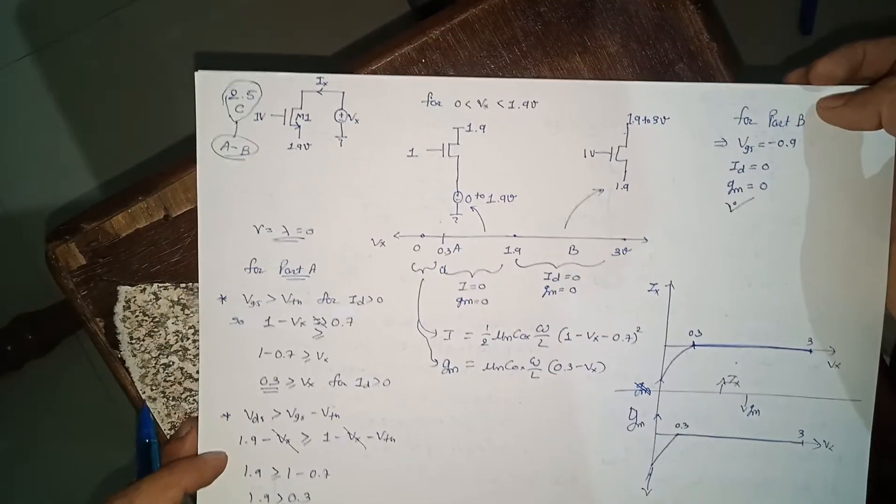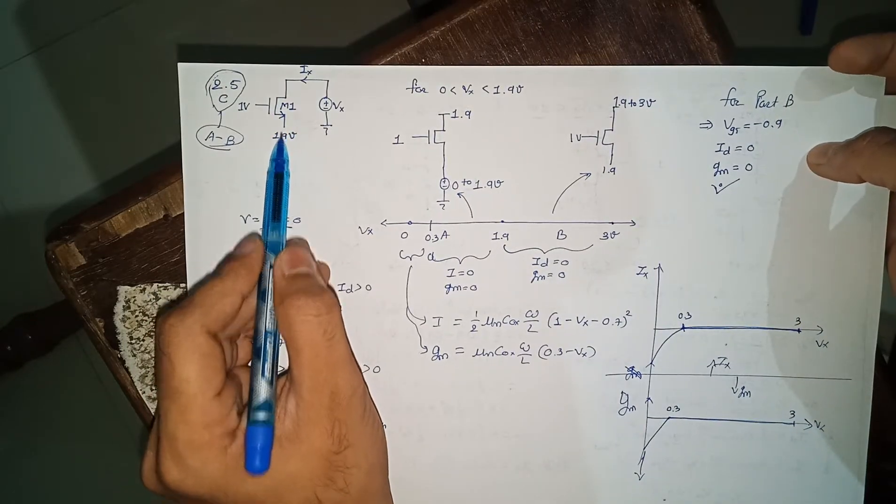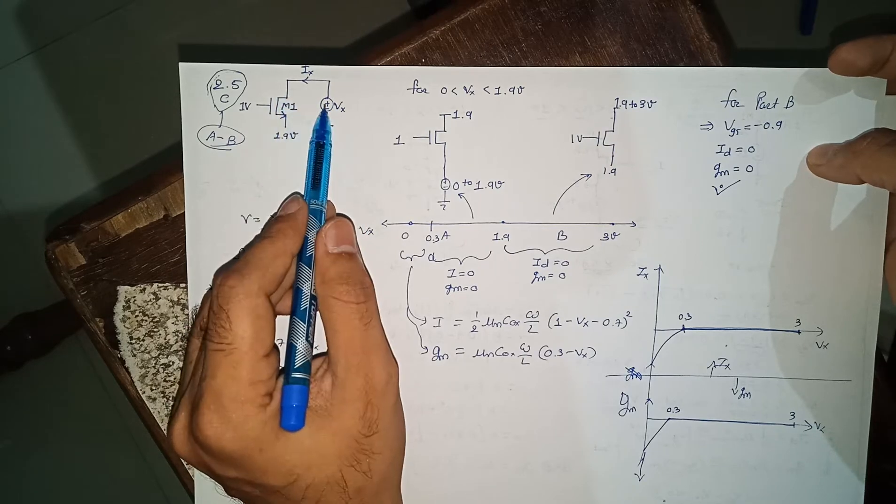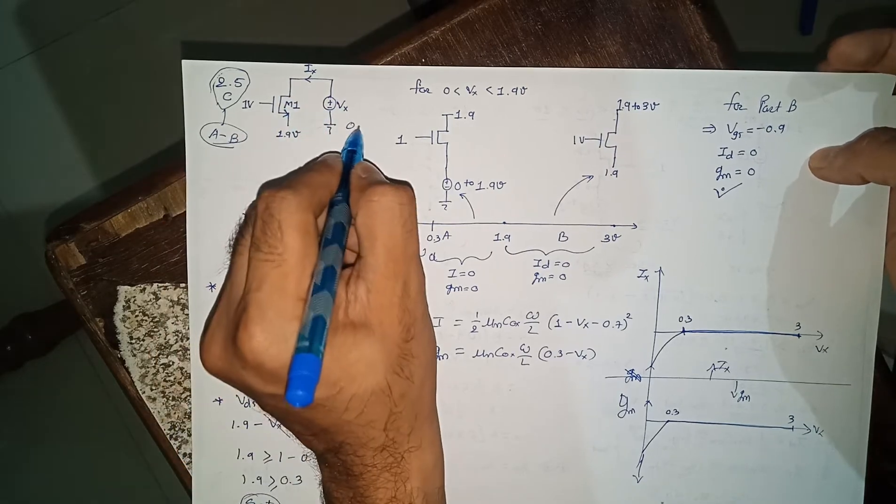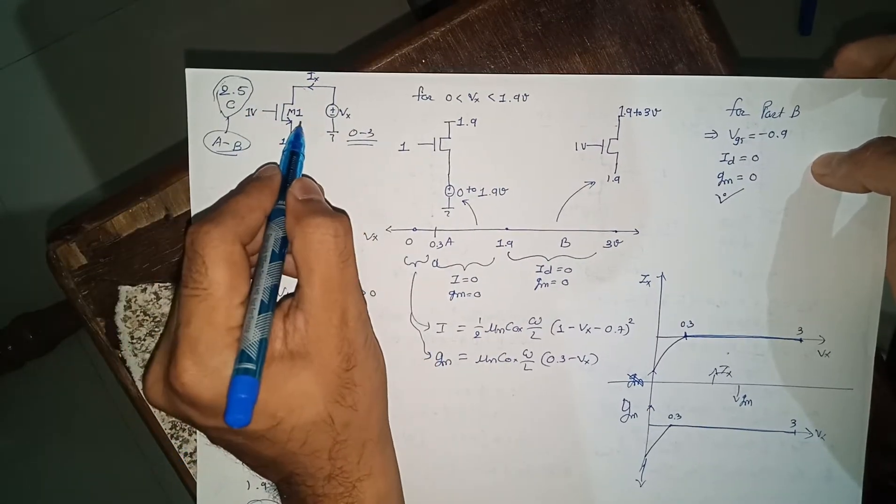They gave one MOSFET. Source is connected to 1.9 volt, gate is connected to 1 volt, drain is connected to Vx. Vx is variable from 0 to 3 volts. We need to find Ix and we need to find gm of this device.